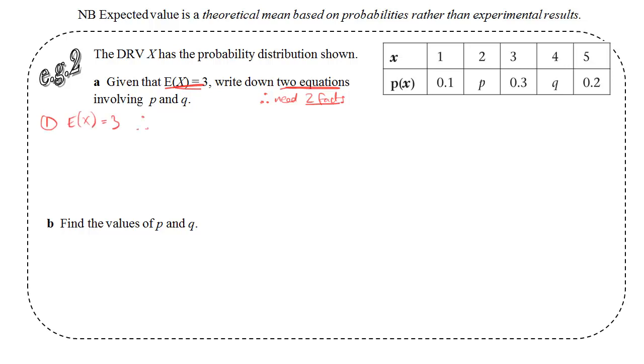The first fact that I'm going to use is this one that we've been given, that the expected value is 3. So if I use the formula that we've just looked at, it means I have to multiply each value by its probability. So 1 times 0.1, 2 times p, 3 times 0.3, 4 times q, 5 times 0.2. That's the expected value, so I can write equals 3. If I tidy that equation up a little bit, we get the following simplified version: 2p plus 4q equals 1. And I'll label that equation 1.